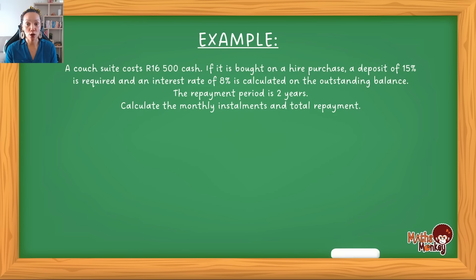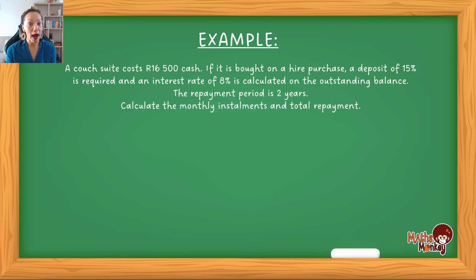So let's jump in and look at this example. A couch suite costs 16,500 Rand cash. But if it's bought on hire purchase, a deposit of 15% is required, and an interest rate of 8% is calculated on the outstanding balance. The repayment period is 2 years. Calculate the monthly installments and the total repayment.